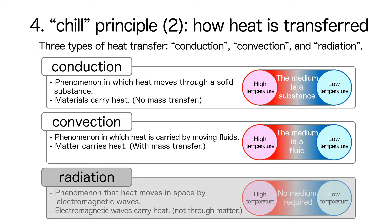Conduction and convection are the ways in which heat is transmitted through materials. Conduction is the transfer of heat without the movement of matter, while convection is the transfer of heat with the movement of matter. In other words, conduction is the way heat is transferred in solids, and convection is the transfer of heat in fluids such as gases and liquids.